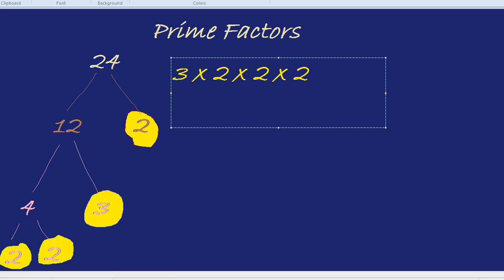There's a fancy way of writing that, though. Instead of writing 3 times 2 times 2 times 2, we can actually write 3 times 2 cubed. If you're not sure what cubed numbers are, you can check out another one of my videos. But basically, 2 to the power of 3 just means 2 times 2 times 2. It saves space writing that all out.